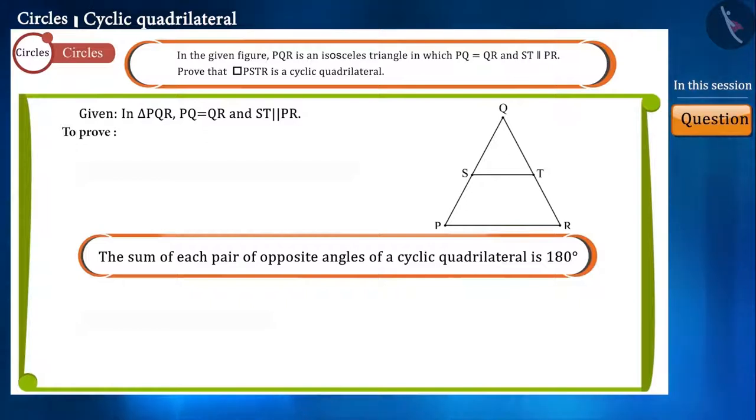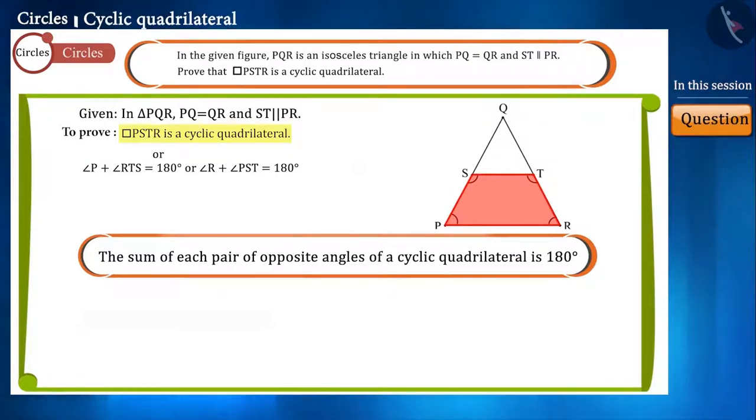So if we prove that angle P plus angle RTS is equal to 180 degrees, or angle R plus angle PST is equal to 180 degrees, then we can say that quadrilateral PSTR is a cyclic quadrilateral. So let's begin.